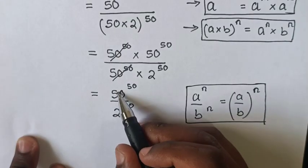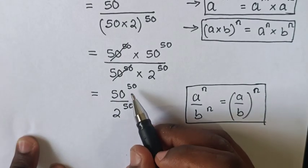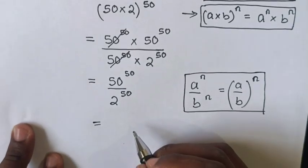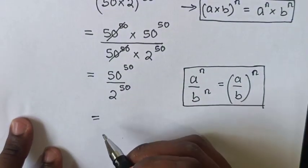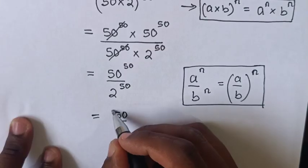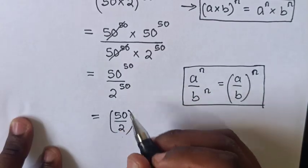Here we have different bases but the same powers, so it equals (50 divided by 2)^50.